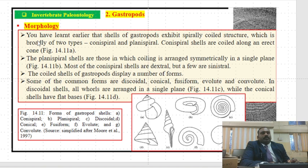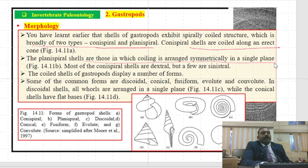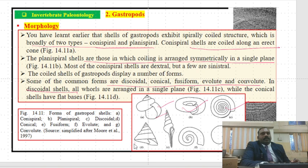The shells of gastropods are spirally coiled structures of probably two types: cone spirals and plane spirals. Cone spiral shells are coiled along an erect cone, and plane spiral shells are those in which the coiling is arranged symmetrically in a single plane. Some common forms are discoidal, conical, fusiform, non-volute, and convoluted. This is the cone spiral; this is the plane spiral and discoidal form.